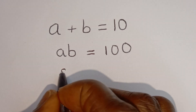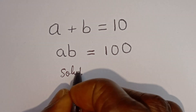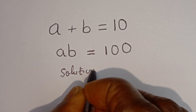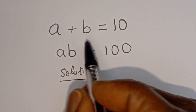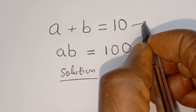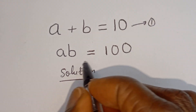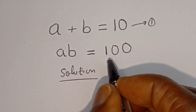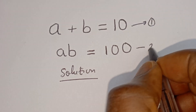Solution. a plus b is equal to 10 — let's call this equation 1. a times b is equal to 100 — let's call this equation 2.